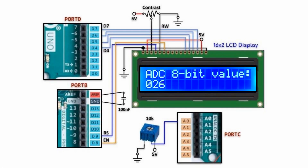And now for a quick demonstration. We increase and decrease the digitized value using a 10k pot, and the digitized value is between 0 and 255.